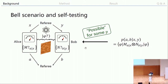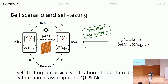If this happens — if the underlying quantum functionality can be determined purely from the observable probability distribution — we call it a self-test. A self-test essentially enables us to classically verify quantum devices. The only things we need to trust are: first, that quantum mechanics is true; second, that the players are not communicating during the game — which can be enforced by locating them far enough apart.